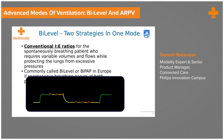In BiPAP, even though the patient is allowed to breathe spontaneously, there is still a fixed I:E ratio, because BiPAP can vary from mandatory or controlled breathing to spontaneous breathing. If the patient switches back to fewer efforts, the I:E ratio ensures sufficient volume is delivered. Conventional I:E ratios of 1:2 or 1:3 are set for these patients.